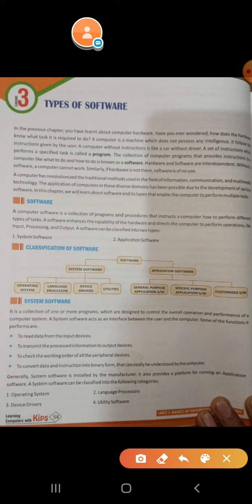System software acts as an interface between the user and the computer. Some of its functions are: to read data from the input device; to transmit the processed information to the output device; to check the working order of all the peripheral devices (input and output devices); and to convert data and instructions into binary form.